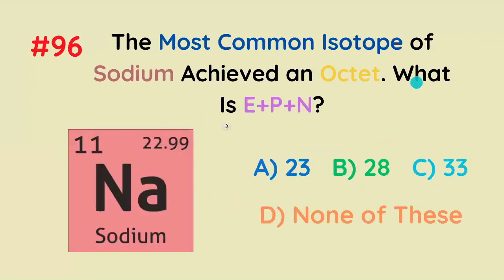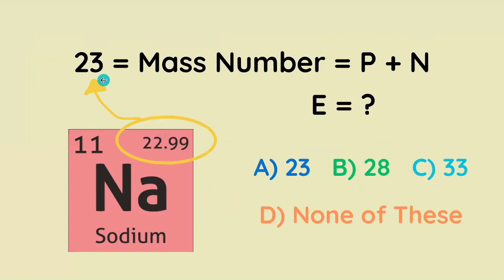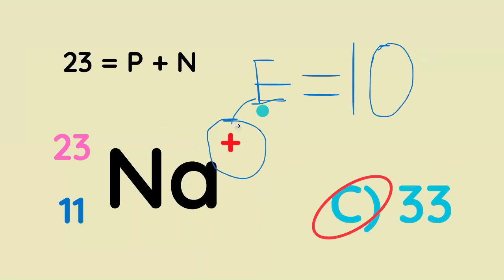What is E plus P plus N for sodium? The mass number, which is P plus N, is 23. If it achieved an octet, it must have a positive 1 charge because it's in group 1, so it's got to have one fewer electron than protons. So the correct answer is 10 plus 23, which is 33.